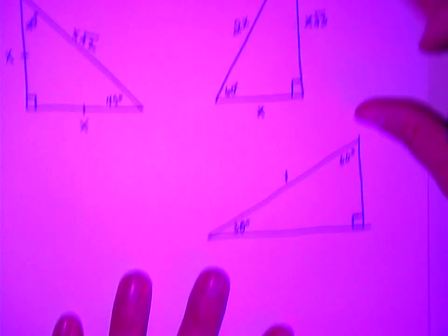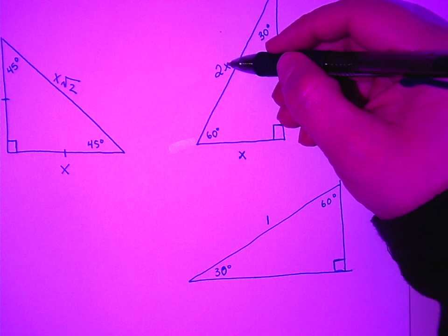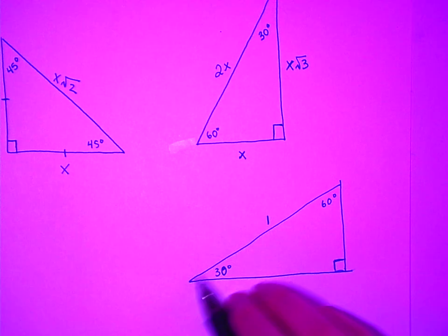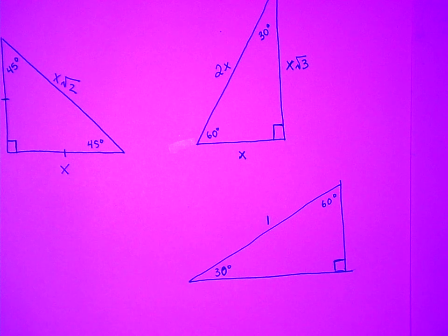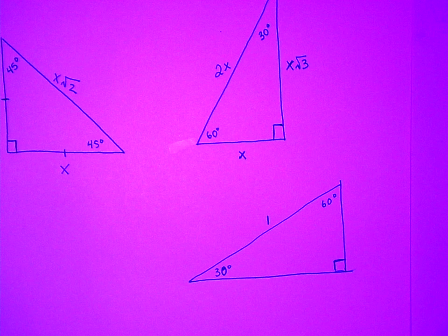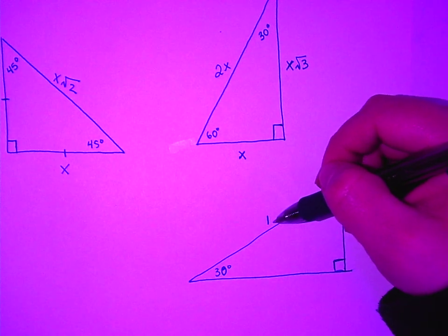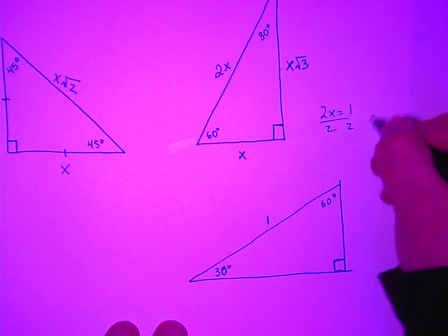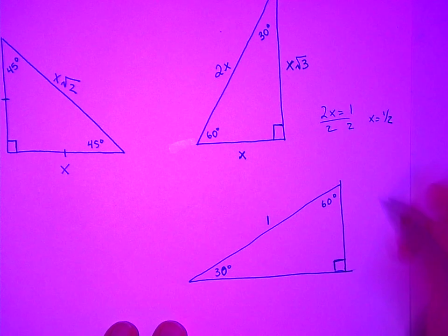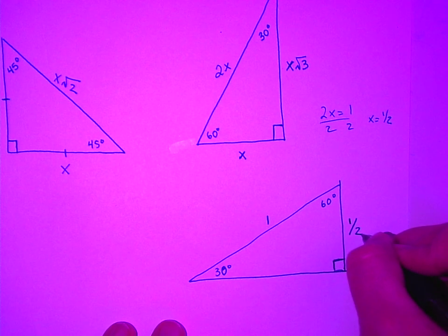Now let's compare that to this triangle up here where we know the rules. The hypotenuse says that 2x is equal to this, right? So what's x? One half, because one half times 2 makes 1. You okay with that? I could also write right here 2x equals 1, solve for it and get x equals one half.